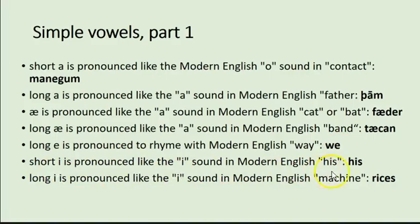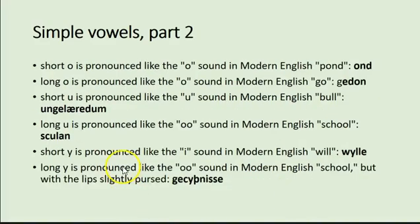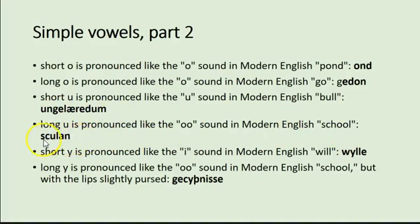Short I is pronounced like the I sound in Modern English 'his' — 'his.' Long Ī is pronounced like the I in 'machine' — 'rīces' is the genitive of 'rīce' meaning kingdom or rule, related to the German word 'Reich.' Short O is pronounced like the O in 'pond' — 'and.' Long Ō is pronounced like the O in 'go' — 'gedon.' Short U is pronounced like the U in 'bull' — 'ungelǣrdum.' Long Ū is pronounced like the U in 'school' — 'sculon' (to go, or school).